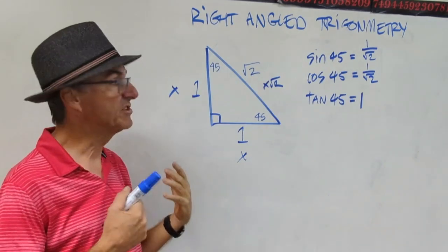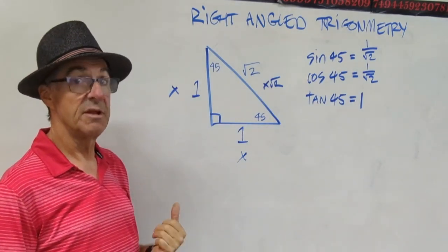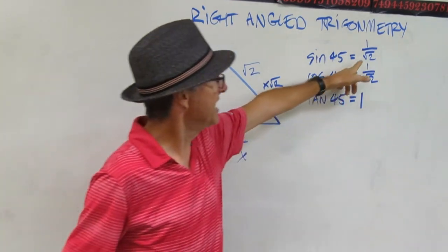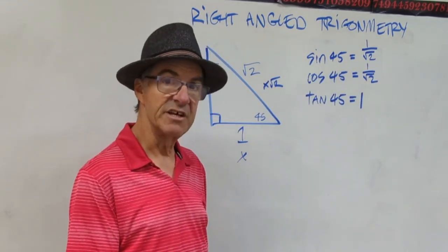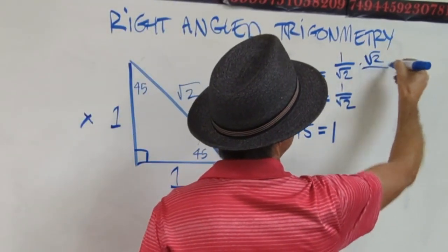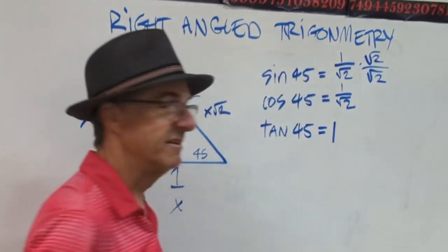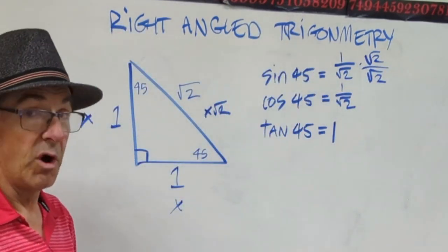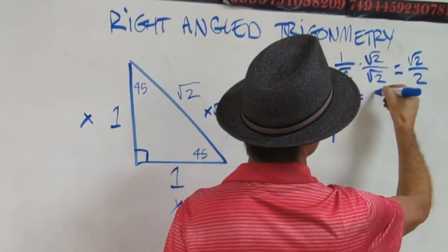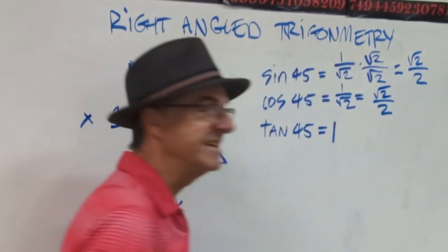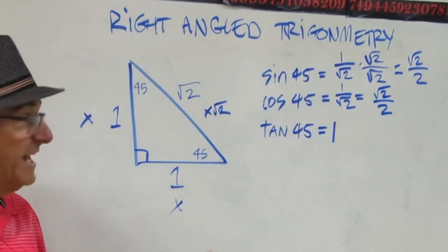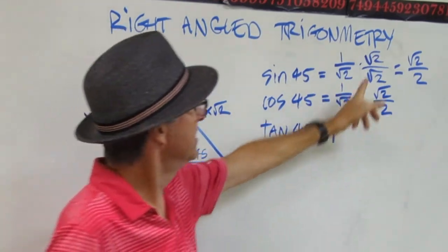We have a convention — we don't like roots in the bottom of fractions. So we simplify by what's called rationalizing the denominator. What we do is multiply by a version of 1 that looks like root 2 over root 2. Root 2 over root 2 is just 1, but this is going to make the fraction be root 2 over 2. So anywhere you have a root in the denominator, you're going to see this little trick.